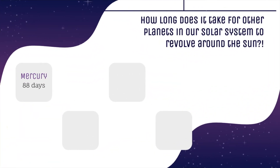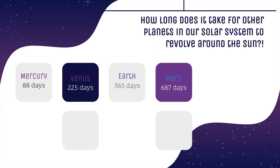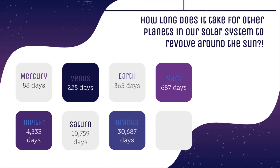How long does it take for other planets in our solar system to revolve around the Sun? For Mercury, it takes 88 days. Venus, 225 days. Earth, 365 days. Mars, 687 days. Jupiter, 4,333 days. Saturn, 10,759 days — you would never have a birthday on that planet. Uranus, 30,687 days. And finally, Neptune, 60,190 days.